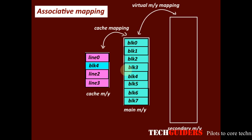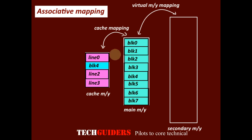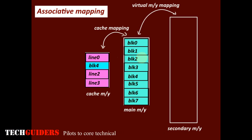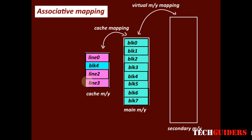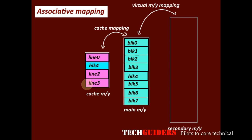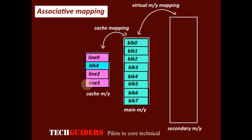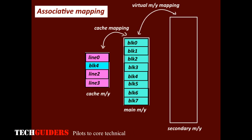In associative mapping, we can keep a main memory block anywhere in the cache. For example, if we need to bring main memory block 2 to the cache memory and we have 3 free cache lines available, we have the freedom to choose any cache line — we can copy it anywhere.